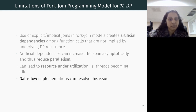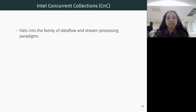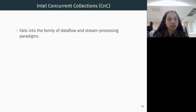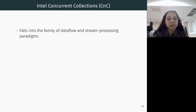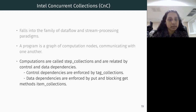All these limitations can be overcome using the data flow implementation. We focus on Intel Concurrent Collections (CNC). Data flow can be thought of as a directed graph of data flowing between operations, where nodes are operations. CNC is an emerging programming paradigm; a CNC program can be thought of as a graph of computation nodes communicating via data. CNC can express task parallelism, data parallelism, loop parallelism, pipeline parallelism, and more.